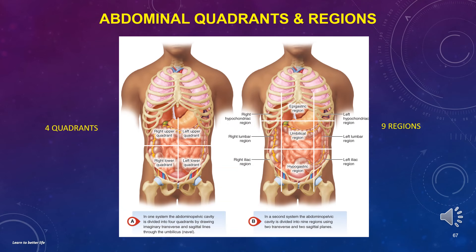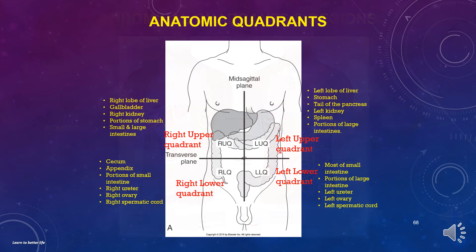The abdominal area is divided into four quadrants and nine regions. The four anatomic quadrants are: right upper quadrant, left upper quadrant, right lower quadrant, and left lower quadrant.